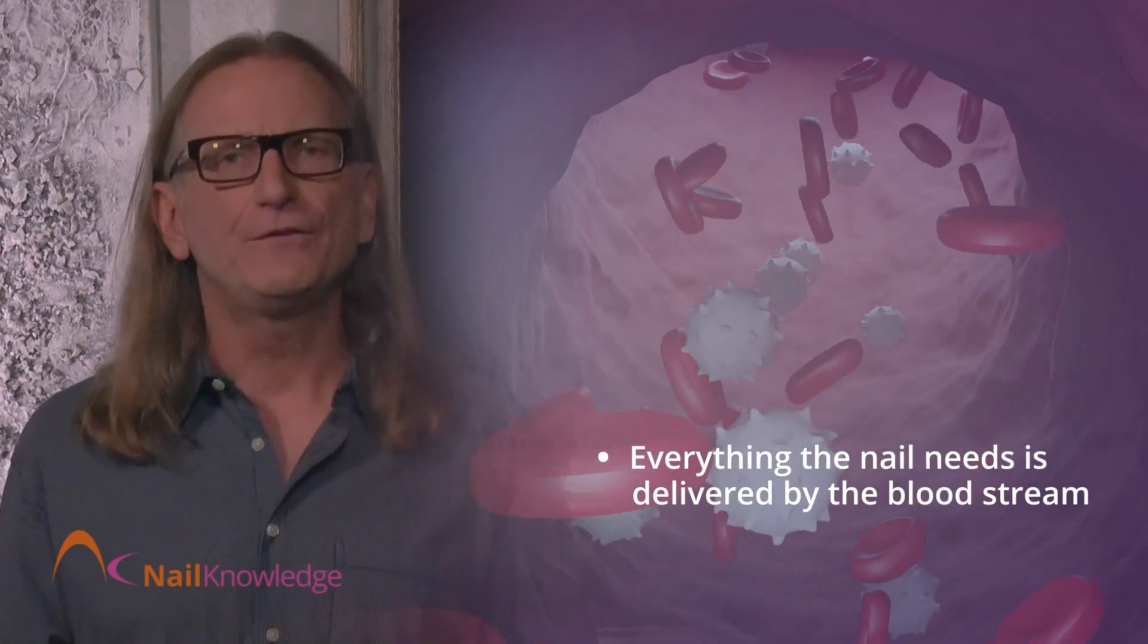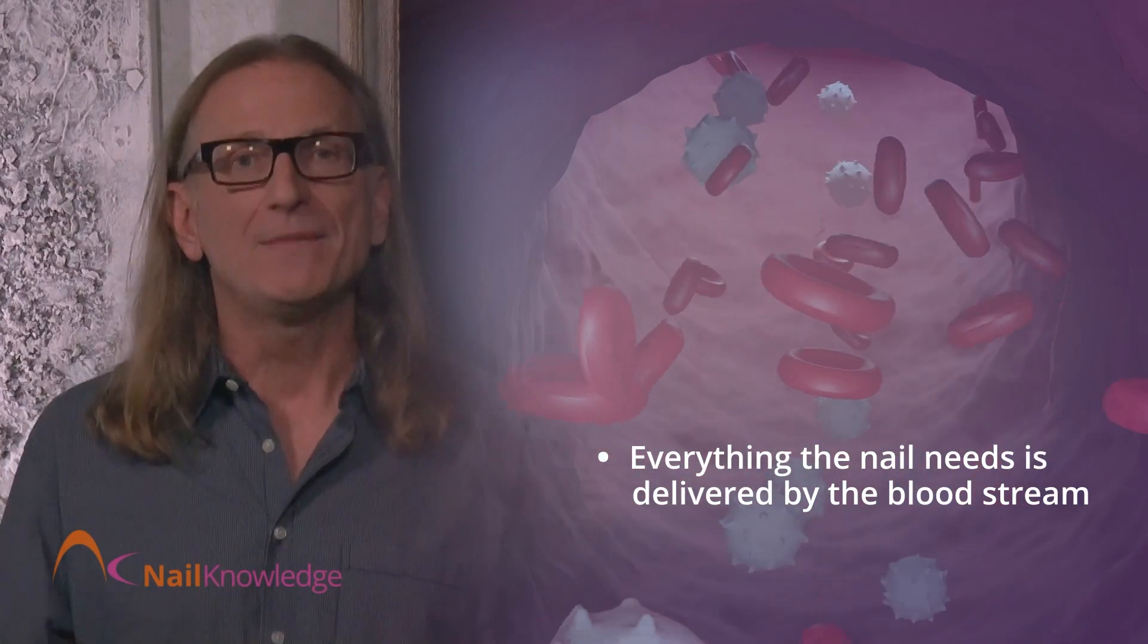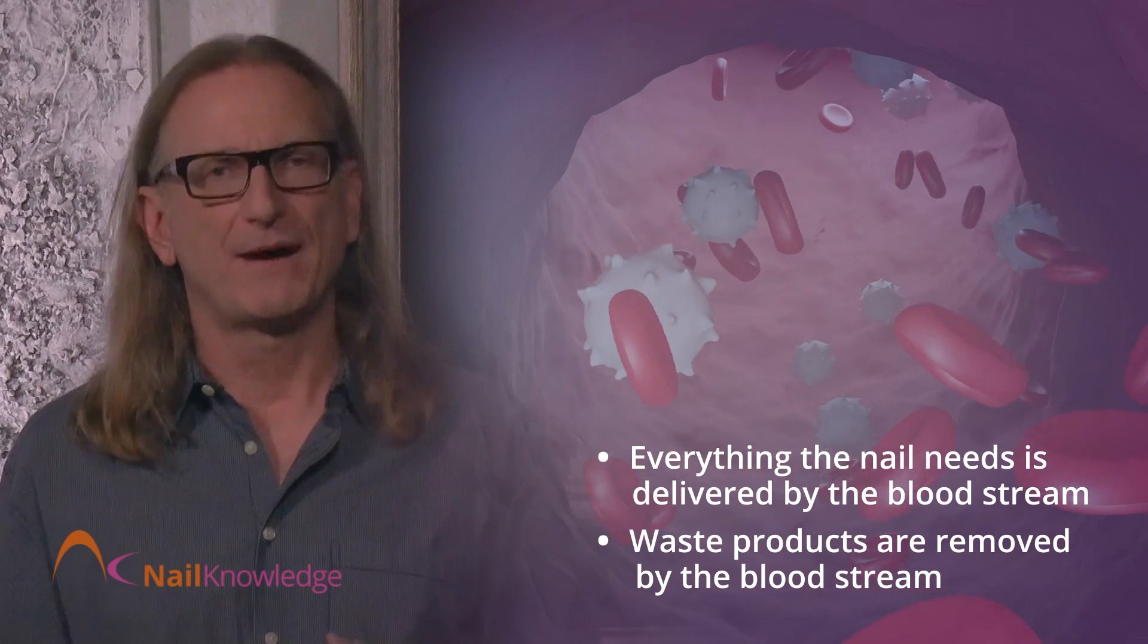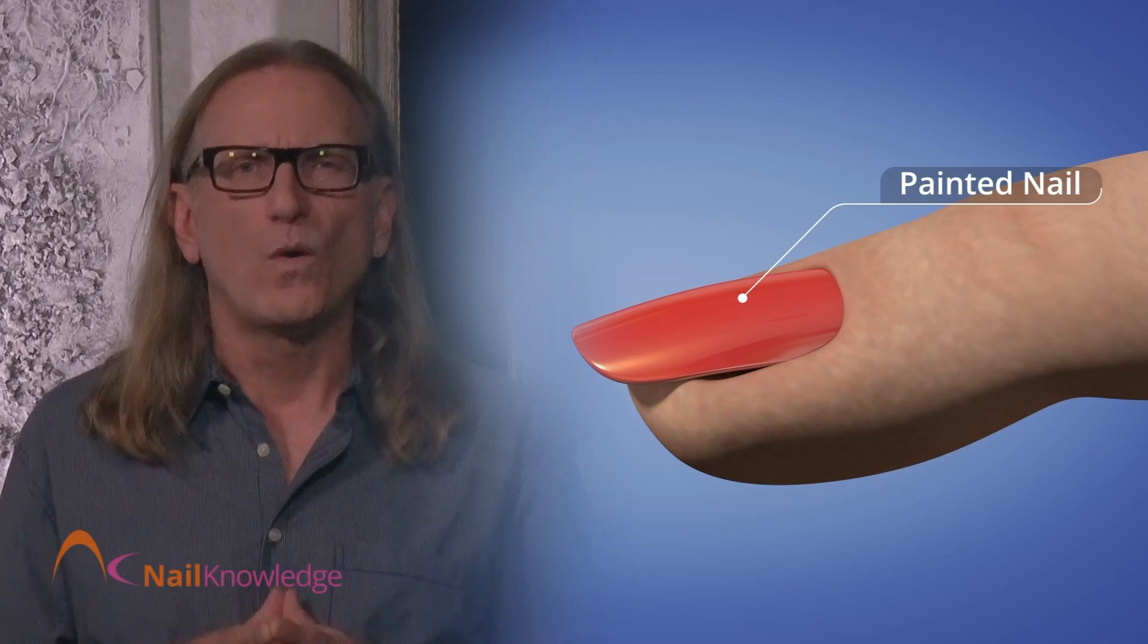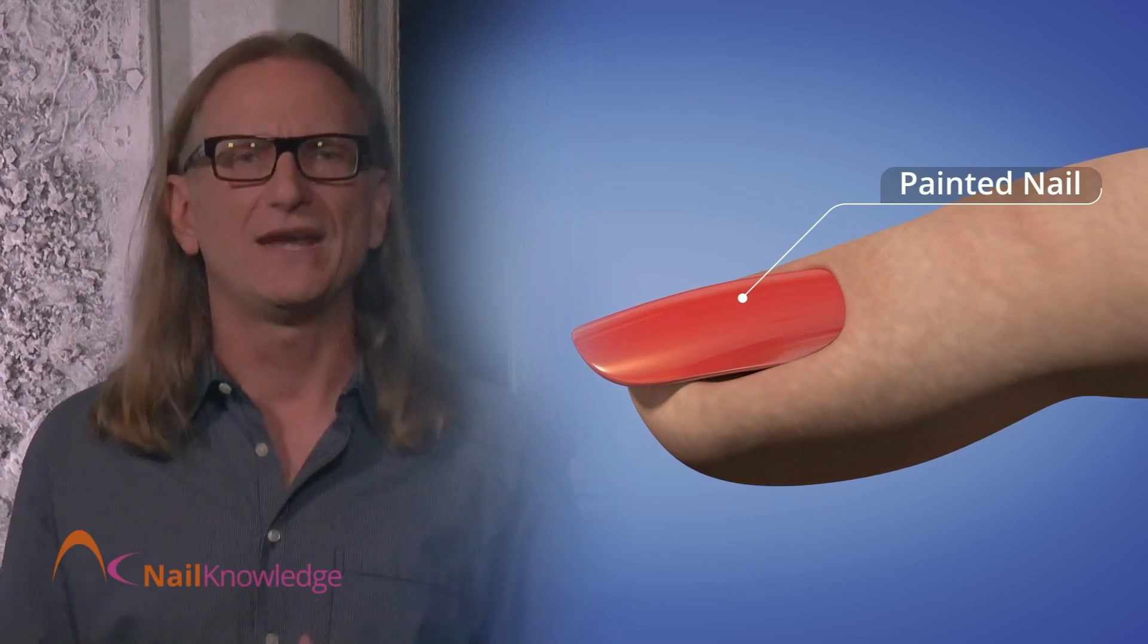Waste products are removed by the bloodstream. When you coat the nail with anything, moisture and natural oils will pass more slowly through the nail plate than normal rate, but they don't become trapped.